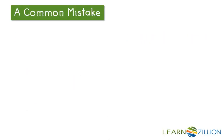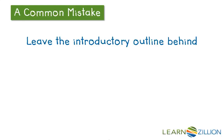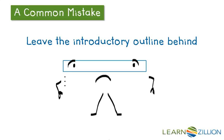A common mistake that many writers make is to leave that introductory outline behind. We don't want to do that because the introductory outline actually helps us set up the rest of the essay. The order of the bullets in the introductory outline is the same order that you'll write your paragraphs in the body of your essay, so we want to include that introductory outline in our thinking as we outline the body.